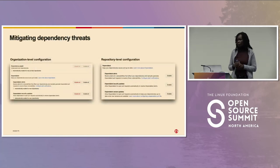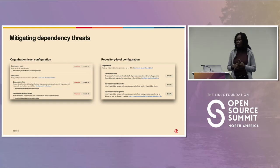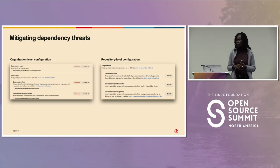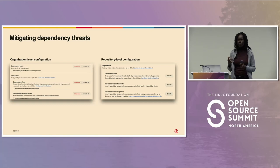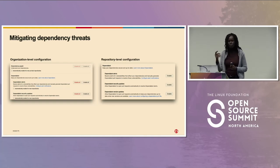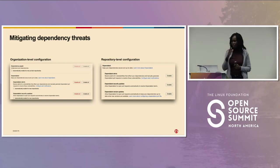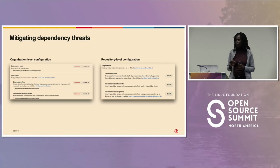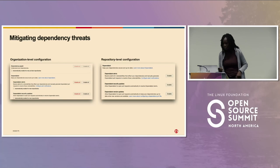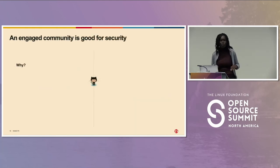For dependency security on GitHub, you can configure settings at both the organizational and repository level. GitHub provides a dependency graph so you can see your dependencies, and Dependabot — usually disabled by default — can be enabled to notify you by email when dependencies have known vulnerabilities. Some maintainers find it noisy, but it's a necessary tool. You can configure it to automatically create pull requests or just send reports when vulnerabilities are found.